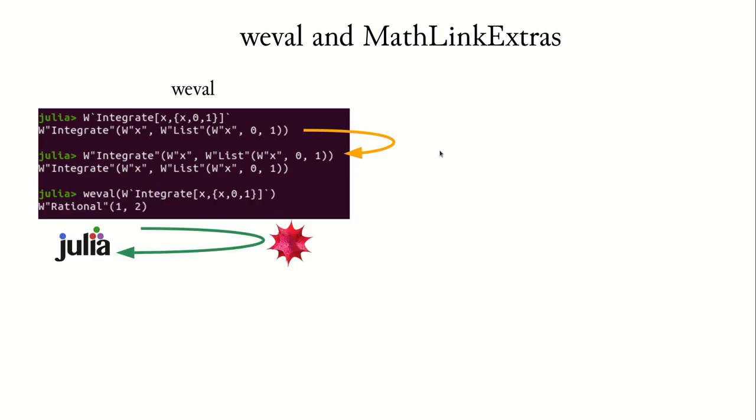However, if you want this to be evaluated, there's a special command called W eval, and this is the command that takes your MathLink expression, sends it to Mathematica, and retrieves the result, in this case one half.